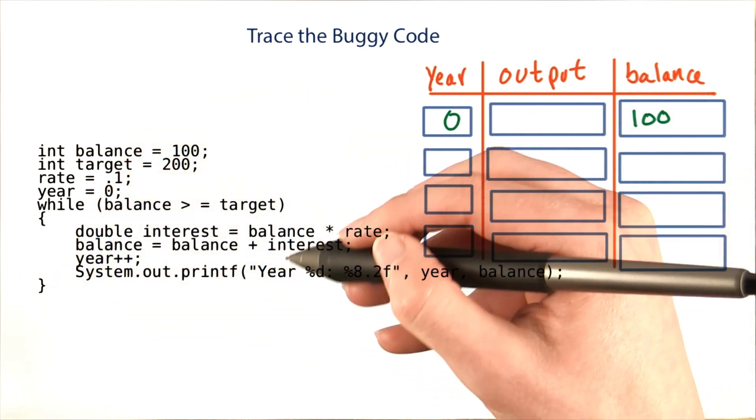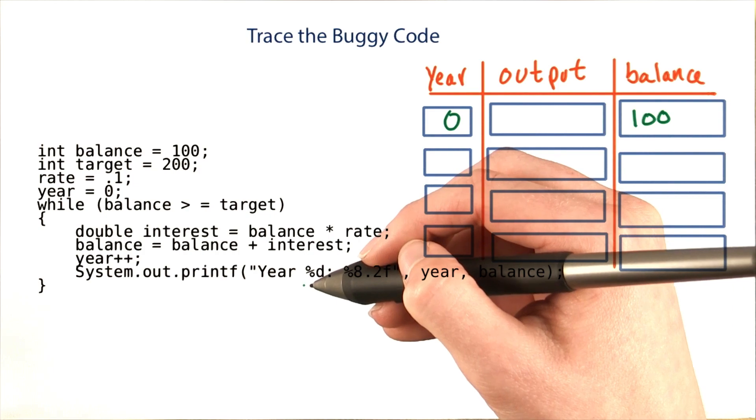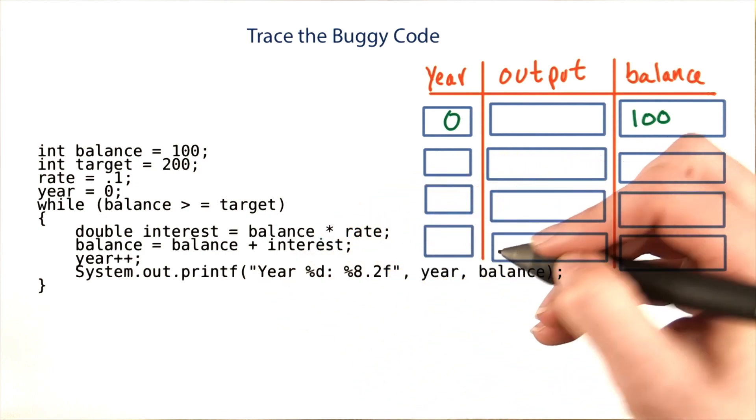What would you say the bug in this code is? How would you fix it? I won't go over this, but if you're not sure, maybe try it out in Blue Jay.